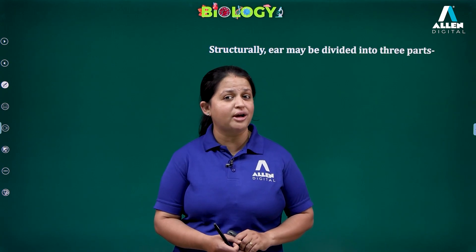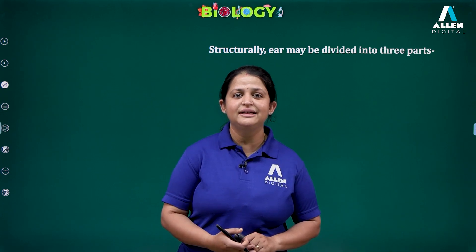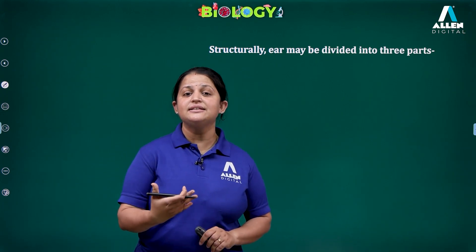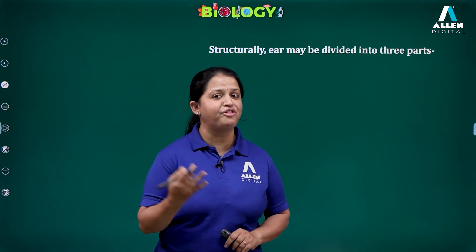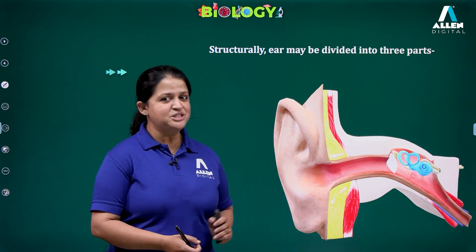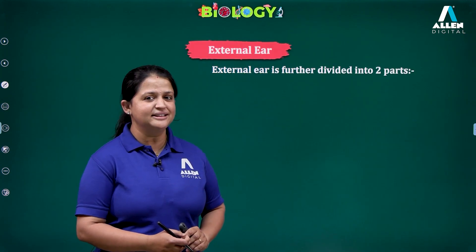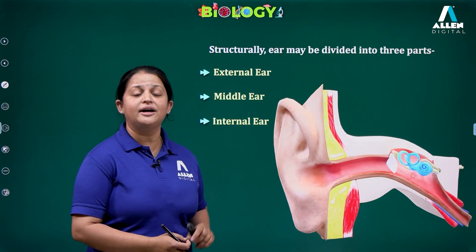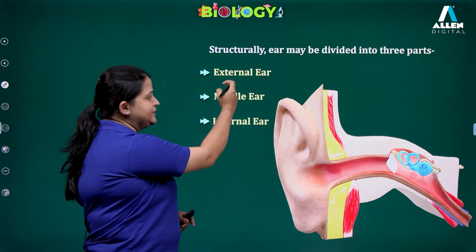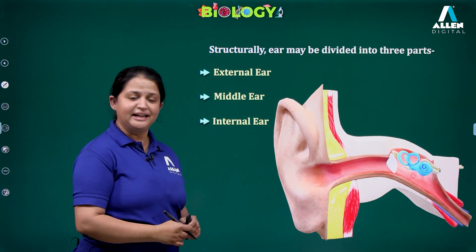The ear is a sense organ mainly meant for hearing as well as for balancing. The structure of the ear mainly consists of three parts: the first is the outer ear, the second is the middle ear, and the third is the internal ear. So there are three parts: external ear, middle ear, and internal ear. Let us discuss one by one in detail.